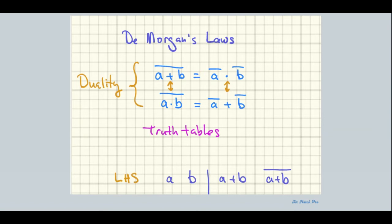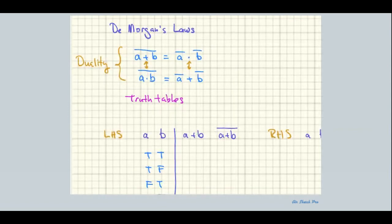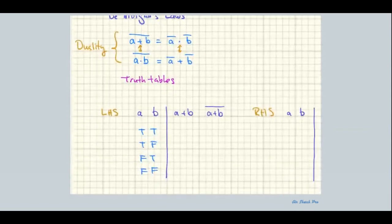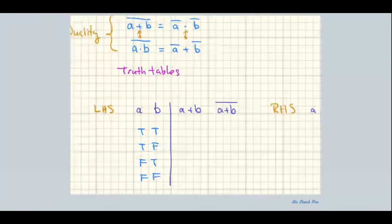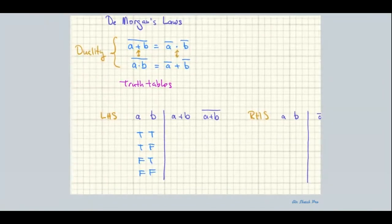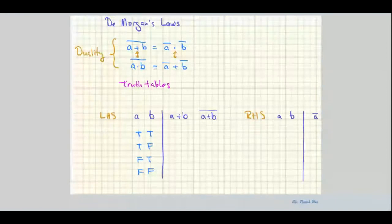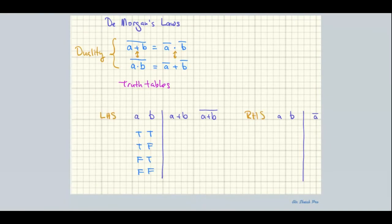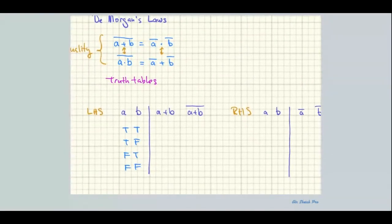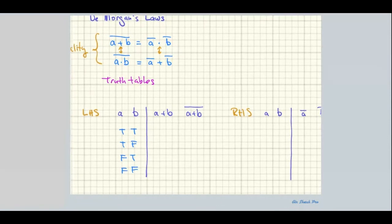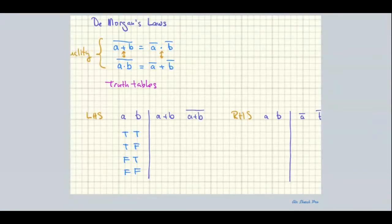I was just going to plug in a couple of values rather than proving it entirely, but upon rethinking it I decided no — if we're going to do this let's do it right. I'm not going to show you all of Boolean algebra, but I am going to prove that De Morgan's laws are true, and we're going to do this exhaustively using truth tables.